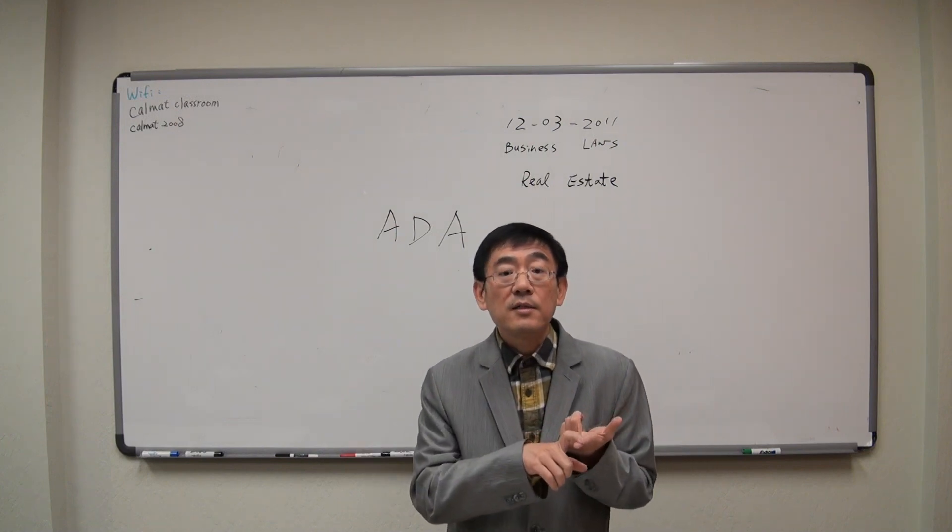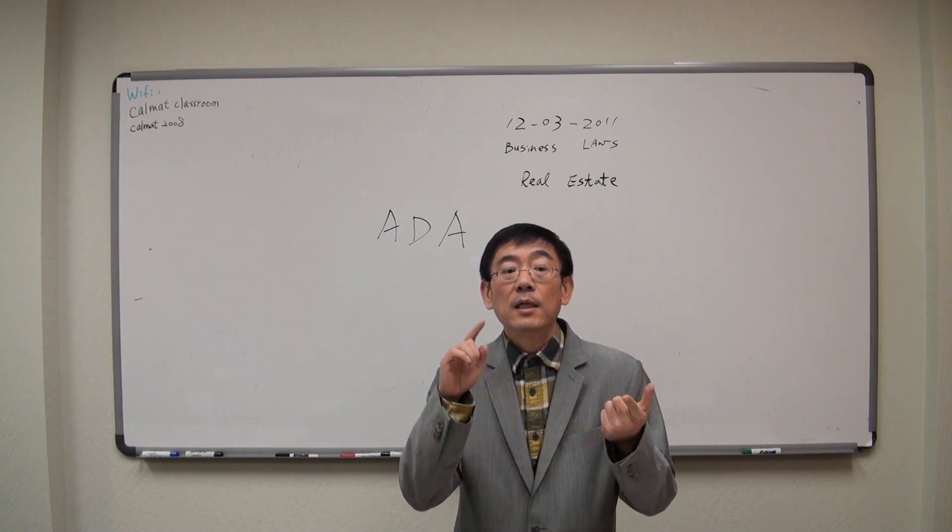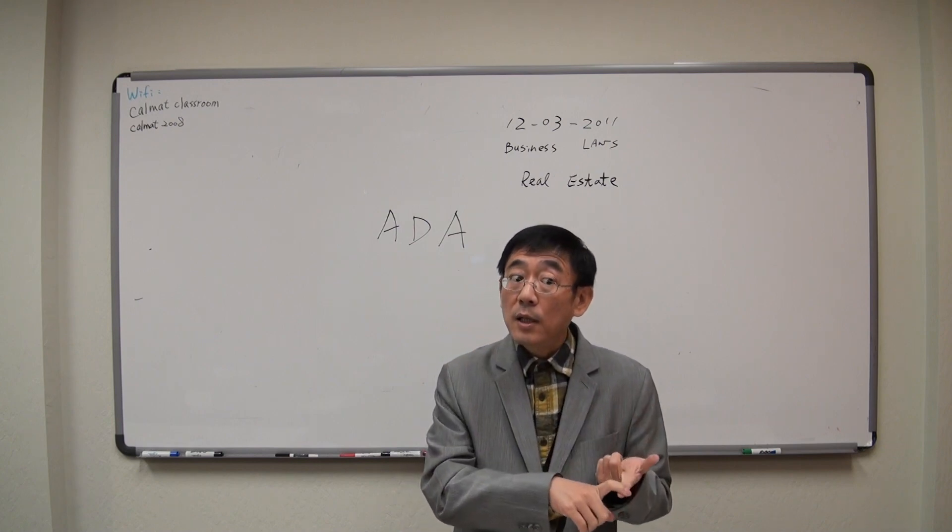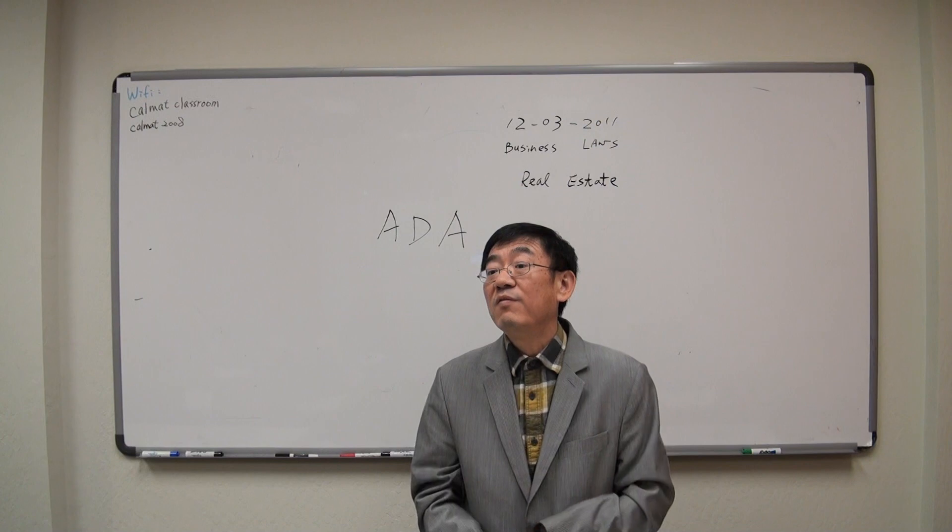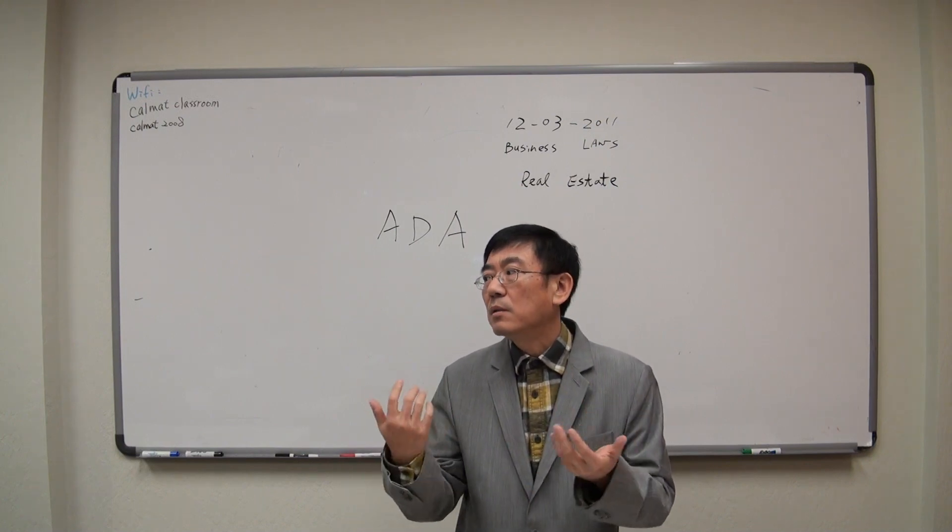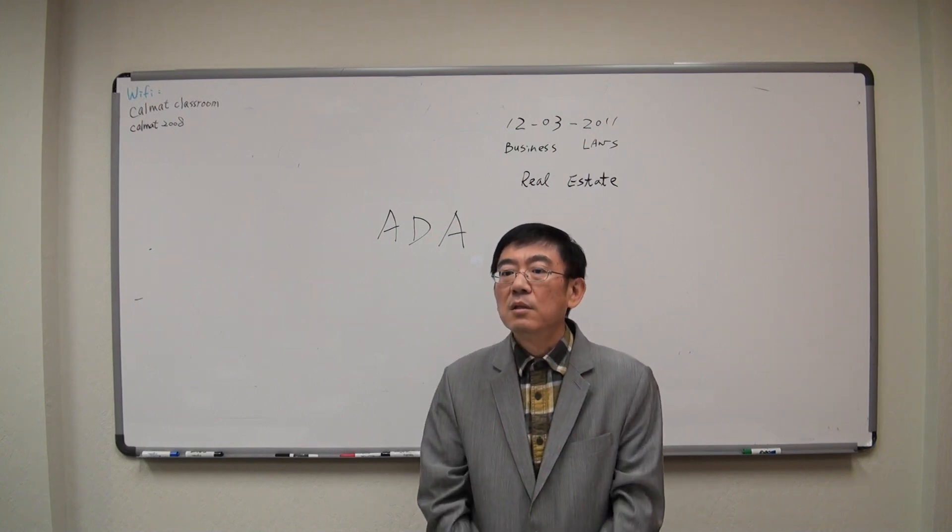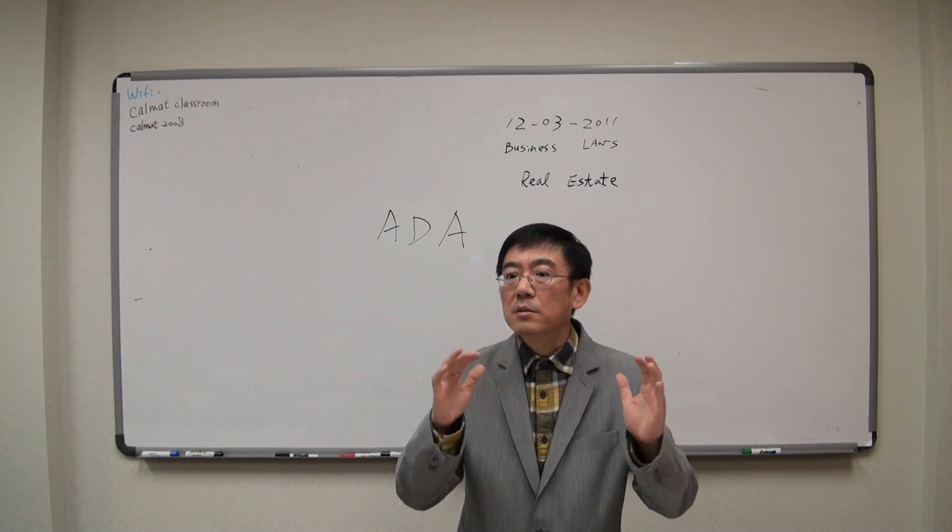More commonly, this kind of case got settled, and usually settlement is paid by the business owner and the landlord fifty-fifty. And settlement amount usually is not very huge, probably around ten thousand dollars.